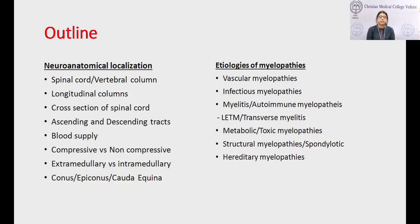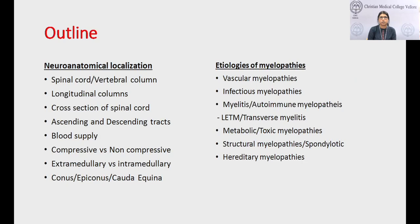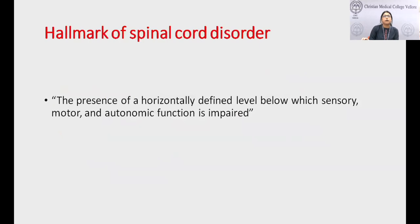This will be the outline of the presentation. The first half will discuss neuroanatomical localization — the cross-section of the spinal cord, ascending and descending tracts, blood supply, compressive versus non-compressive lesions, extramedullary versus intramedullary lesion differentiation, and the concept of conus, epiconus, and cauda equina. The second half will cover the etiology of myelopathies: vascular, infectious, inflammatory, metabolic, toxic, structural, spondylotic, and hereditary myelopathies.